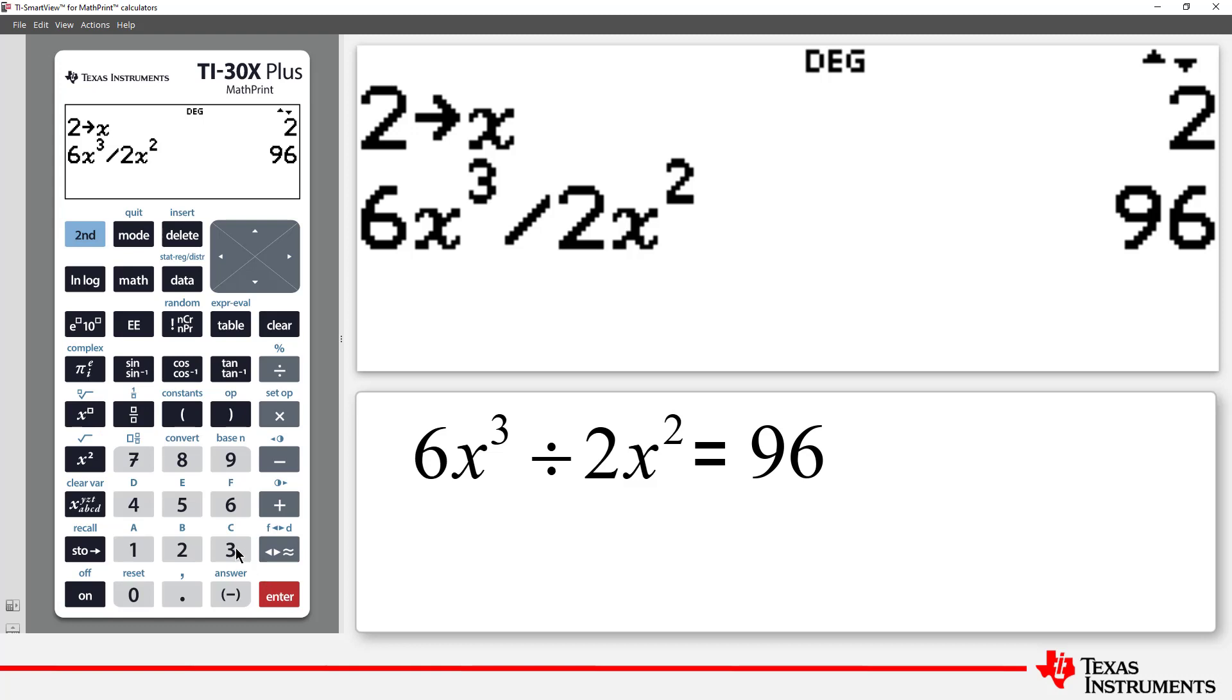We get the same answer from 3x to the power of 5. 3x to the power of 5 is an algebraic simplification of 6x cubed divided by 2x squared.